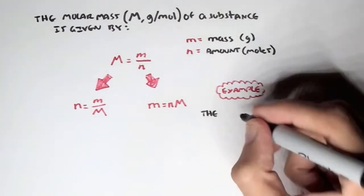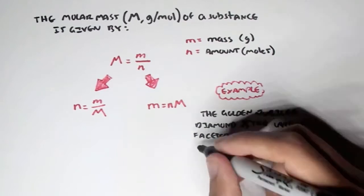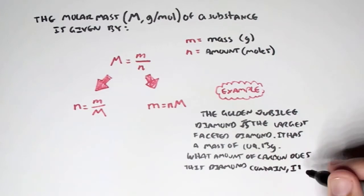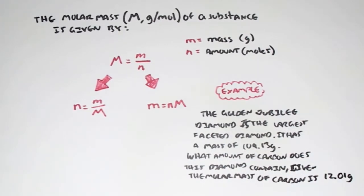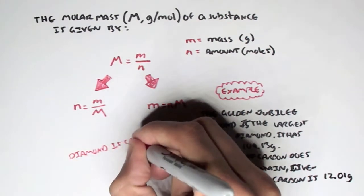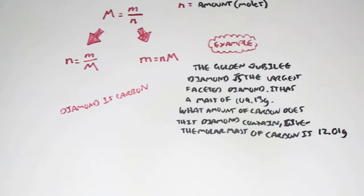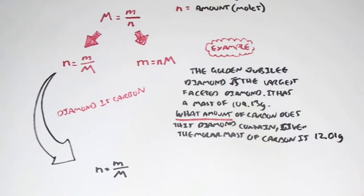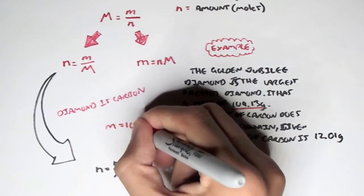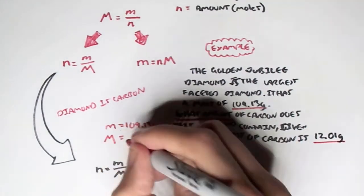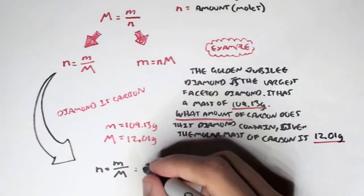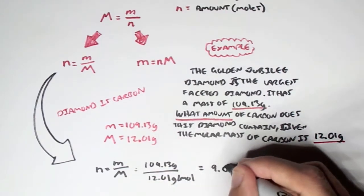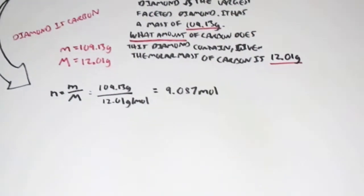For example: the Golden Jubilee diamond is the largest faceted diamond and has a mass of 109.13 grams. What amount of carbon does it contain, given the molar mass of carbon is 12.01 grams per mole? Diamond is made up of carbons, and we're finding n. Using M = m/n, with mass 109.13 grams and molar mass 12.01 grams per mole, we get 9.087 moles of carbon.